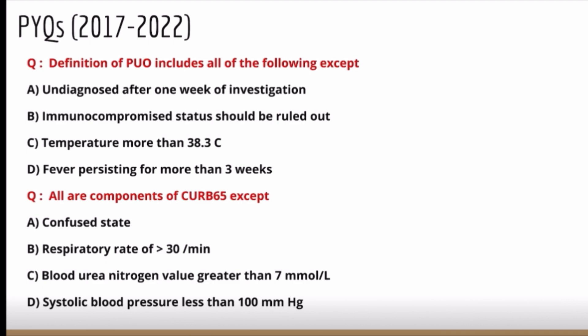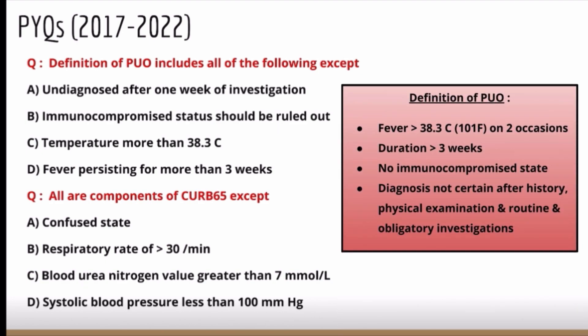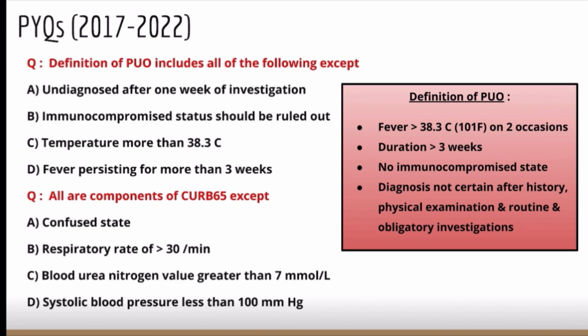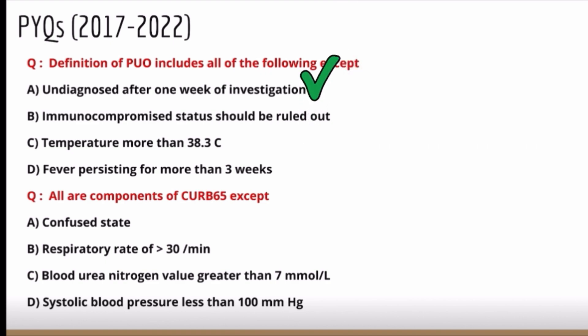To answer this, we should know the definition of PUO: fever more than 38.3 degrees Celsius on two occasions, duration more than three weeks, no immunocompromised state, and diagnosis not certain after complete history, physical examination, and routine obligatory investigations. Option A — undiagnosed after one week — is incorrect; it should be at least three weeks. So that is the correct answer.